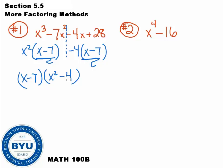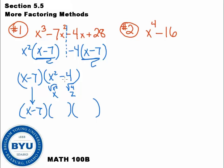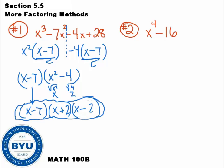I'm looking at x squared minus 4 — this factors more. It's a two-term polynomial that is a perfect square. The square root of x squared is x, and the square root of 4 is 2. So this factors down. I've got x minus 7, which doesn't factor further, but x squared minus 4 does factor into two parentheses: x plus 2 and x minus 2. That is my answer.